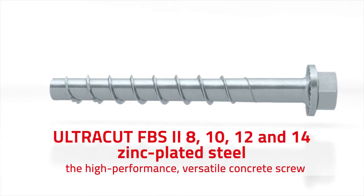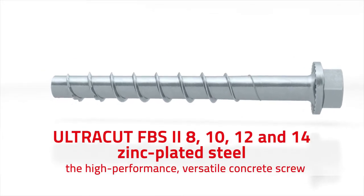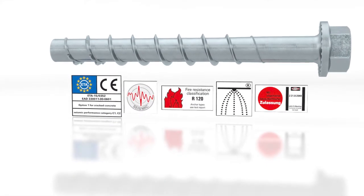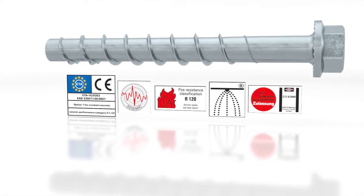Ultracut FBS2 in zinc-plated steel with a diameter of A240. Secure and flexible in cracked and non-cracked concrete, even in earthquake zones.